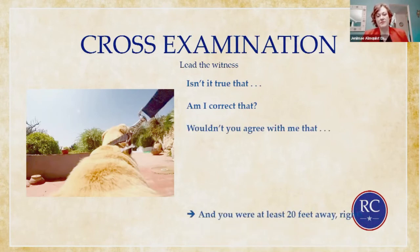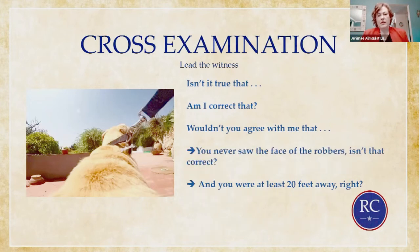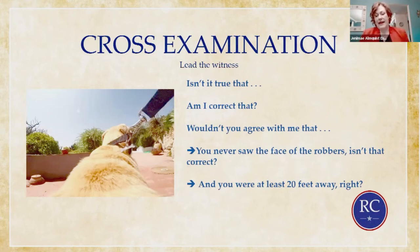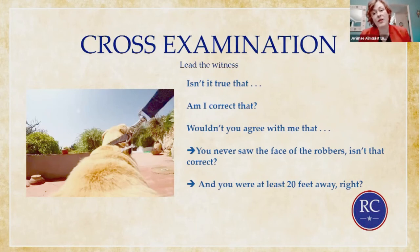A good cross-examiner — the defense — after your direct examination of the security guard, might ask questions like: 'And you were at least 20 feet away, right?' 'You never saw the face of the robbers because they were wearing masks — isn't that true?' There are lots of ways to lead the witness. You can put the fact at the beginning and say 'isn't that right?' or start with 'am I correct that?' It doesn't matter how you structure the sentence as long as you're controlling the witness and suggesting their answer. Even if the guard says no, you've still planted doubt in the jury's mind.